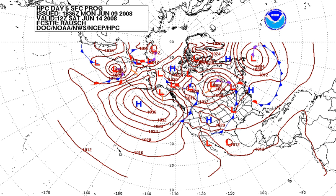Surface pressure is the atmospheric pressure at a location on Earth's surface, and is directly proportional to the mass of air over that location. Atmospheric models such as general circulation models usually predict the nondimensional logarithm of surface pressure. The average value of surface pressure on Earth is 985 hectopascals. This contrasts with mean sea level pressure, which involves the extrapolation of pressure to sea level for locations above or below sea level. The average pressure at mean sea level in the International Standard Atmosphere is 1013.25 hectopascals, or 1 atm, or 29.92 inches of mercury.